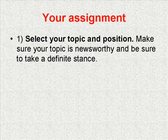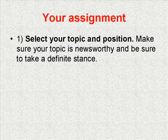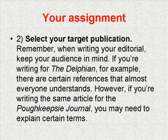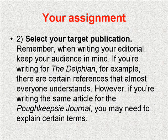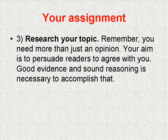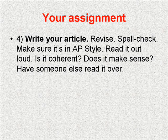So now let's go over your assignment in depth. First, you need to select your topic and what your position on that topic is going to be — make sure your topic is newsworthy and be sure to take a definite stance. Second, select your target publication, and keep your audience in mind. If you're writing for the Delphian, the student newspaper of Adelphi University, there are certain references that almost everyone understands. However, if you're writing for the Poughkeepsie Journal or the New York Times, you may need to explain certain terms. Third, research your topic — remember, you need more than just an opinion. Your aim is to persuade readers to agree with you, and good evidence and sound reasoning are necessary to accomplish that.